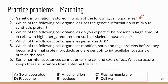Number two: which of the following cell organelles uses the genetic information in messenger RNA to synthesize proteins? The correct answer is ribosome — that's the job of the ribosome. Number three: which of the following cell organelles do you expect to be present in large amounts in cells with a high energy requirement, such as skeletal muscle cells? Energy, the powerhouse — that's mitochondria.